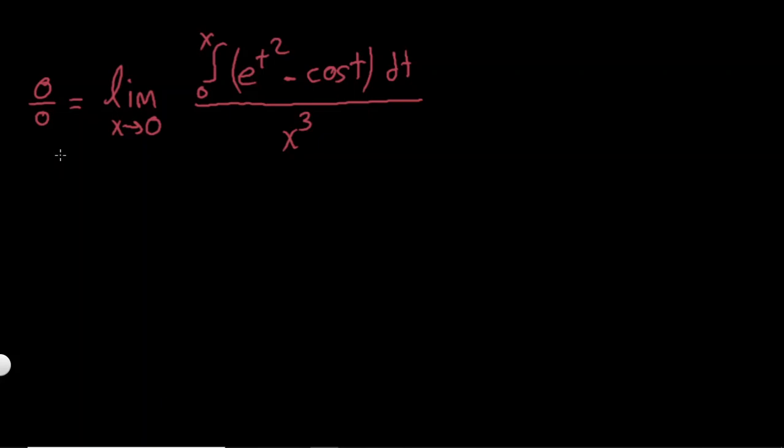And here what we can do is, and here it should be a hint for you that you can find an elementary antiderivative for e to the t squared. So here it should ring a bell that maybe we can use L'Hopital. And let's see how would that look like.